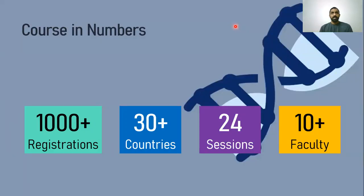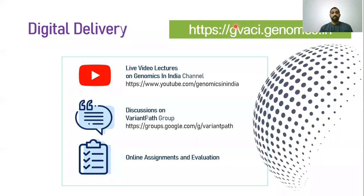Thanks to the wonderful participation from you all, this course has received over 1000 registrations coming from over 30 countries, making it a truly international course. We plan to have over the next 12 weeks, 24 sessions over Saturdays and Sundays every week at 6pm, taken by over 10 faculty, mostly chosen from the CSIR Institute of Genomics and Integrative Biology.